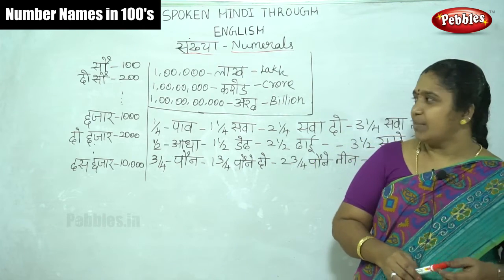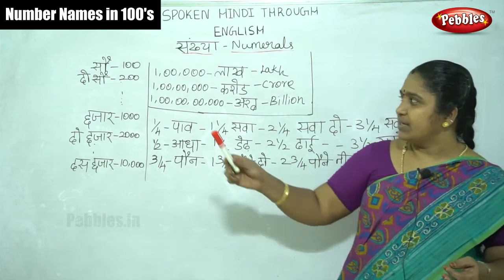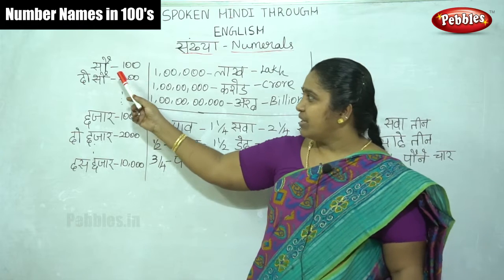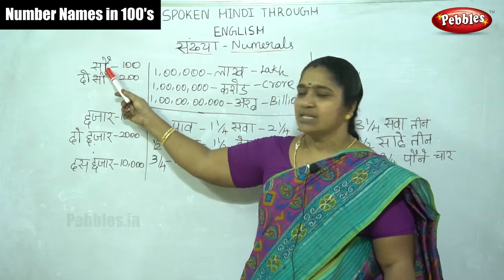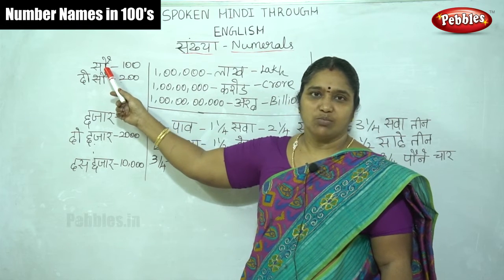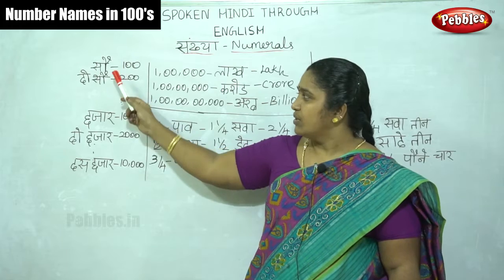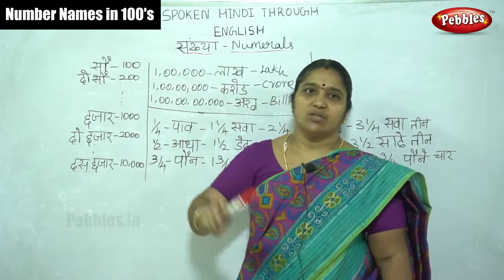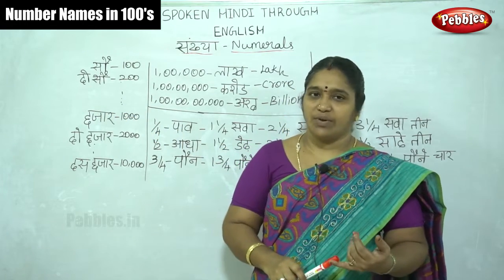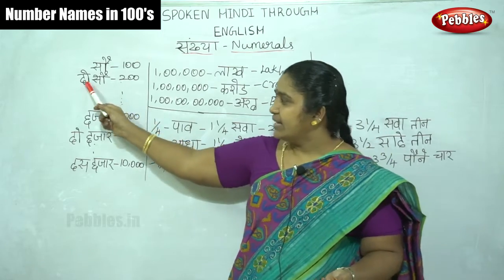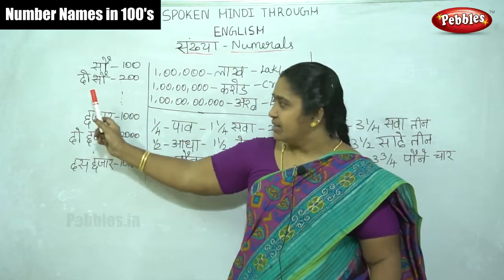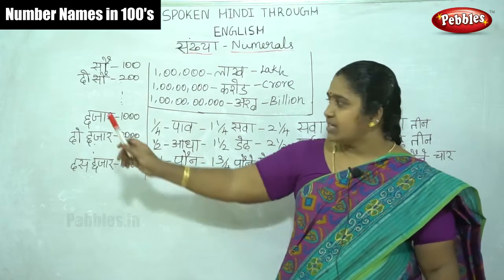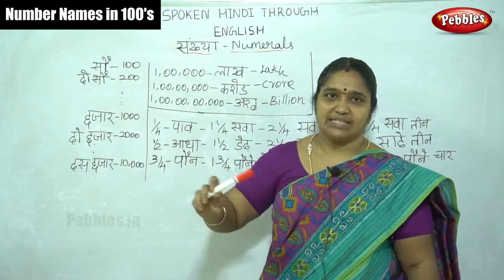We can see the number names in hundreds. For 100, the name is Sau. For 200, we say Do Sau. We can add the number before Sau — Teen Sau for 300, Chaar Sau for 400.